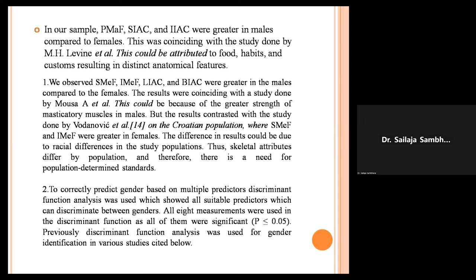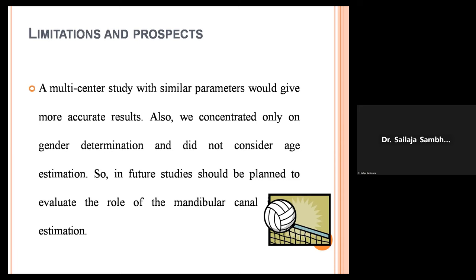To correctly predict gender based on multiple predictors, discriminant function analysis was used, showing all suitable predictors that can discriminate between genders. All eight measurements were used in the discriminant function analysis as all were significant. Limitations include that a multicenter study with similar parameters would give more accurate results. Additionally, the study concentrated only on gender determination and not age estimation, so future studies should evaluate the role of the mandibular canal in age estimation.